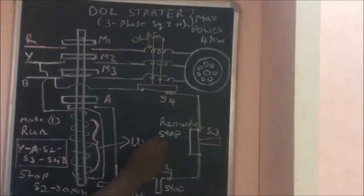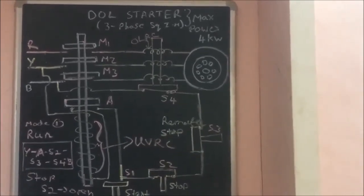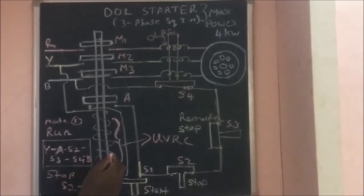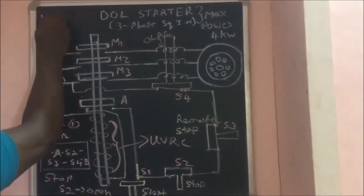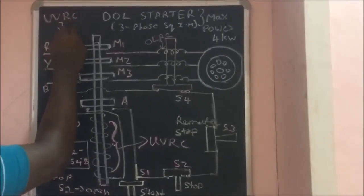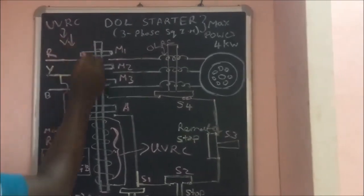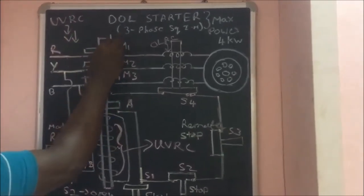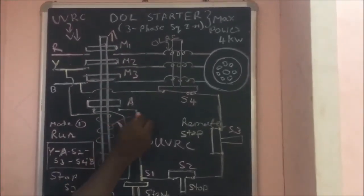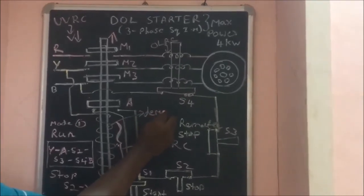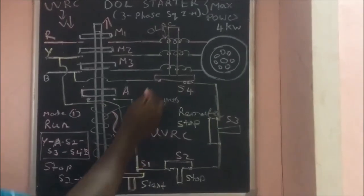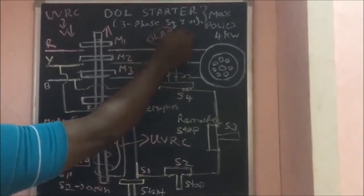When the under-voltage coil is magnetized, the nearby iron rod gets attracted. M1, M2, M3 conductors will close, current flows to the motor, and the motor starts rotating in running condition. Now S1 switch goes back to its original open condition, but current continues to flow through B-phase conductor via S2, S3, S4. The under-voltage release coil remains magnetized and the motor runs continuously even after releasing the green button.